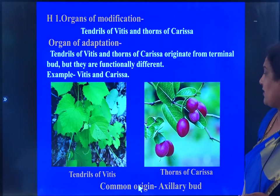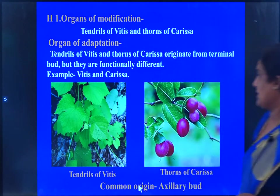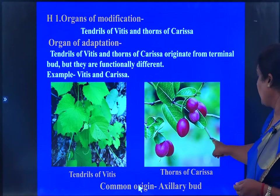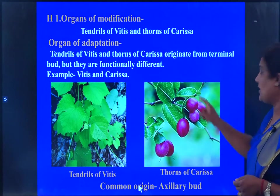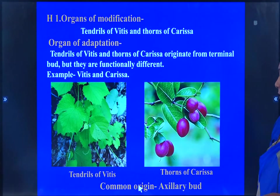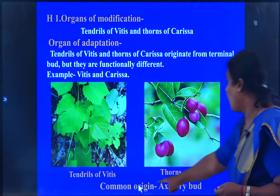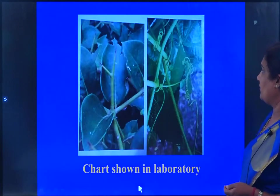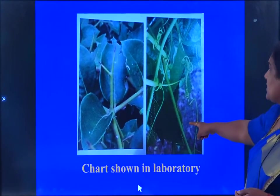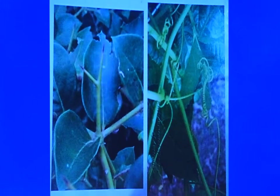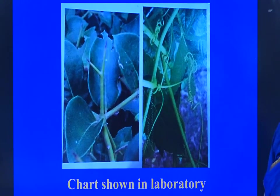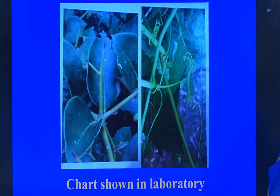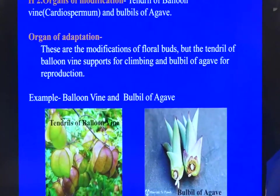Functionally they differ. The tendrils of Vitis provide support for climbing, but the thorns of Carissa have a different function — they provide protection. Both of them have the common origin from their axillary bud. This is the chart we have in our laboratory, and it would be placed in the position of F during your examination, and you are supposed to comment on it.